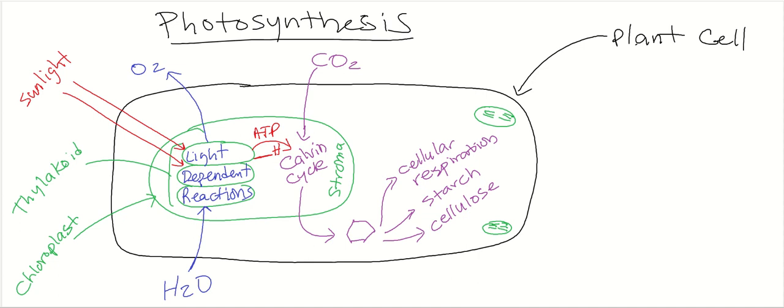By the way, there's a chemical pigment in the thylakoids that make them green, and that's called chlorophyll. I'm not going to write that up here. It's not the most important thing, but chlorophyll is a pigment that absorbs the sunlight. So you may see that word.